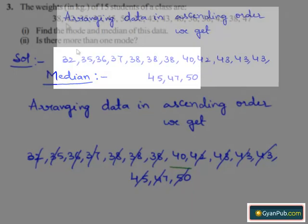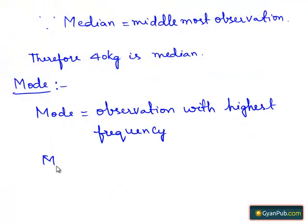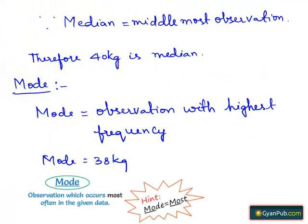Here there are 38 and 43. Two observations have occurred more frequently than any other observations. So mode is equal to 38 kg and 43 kg.